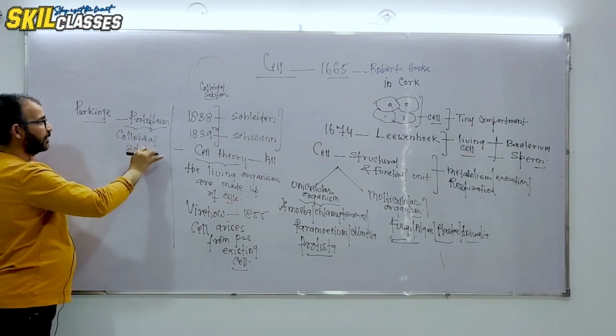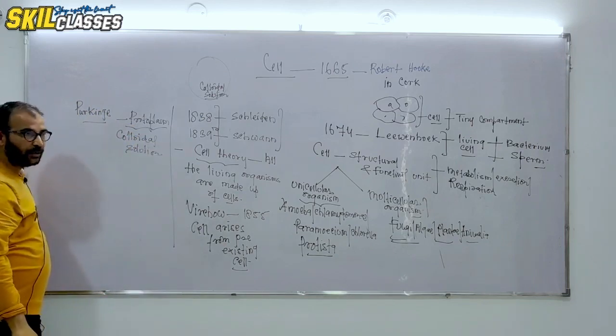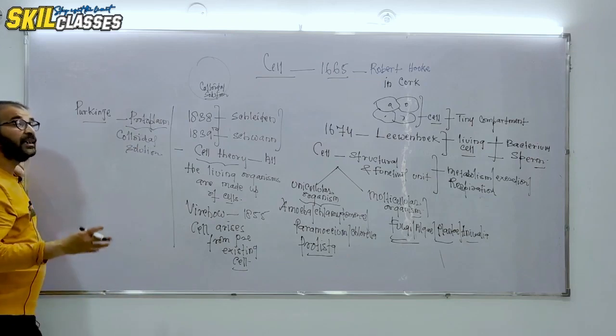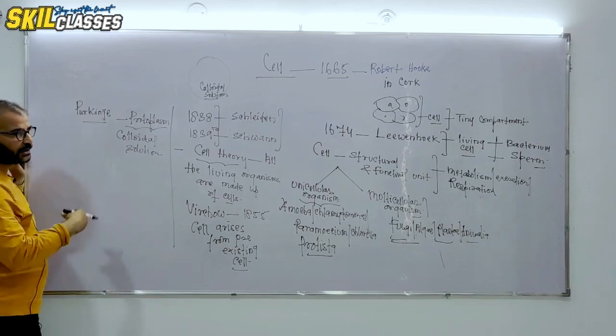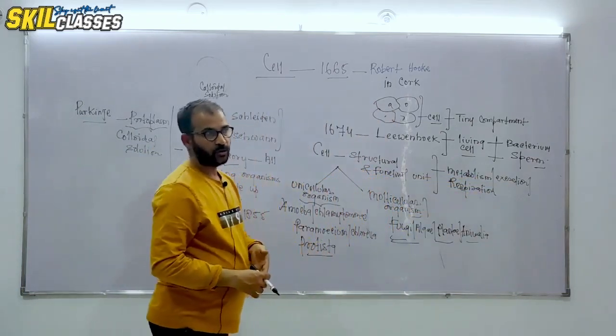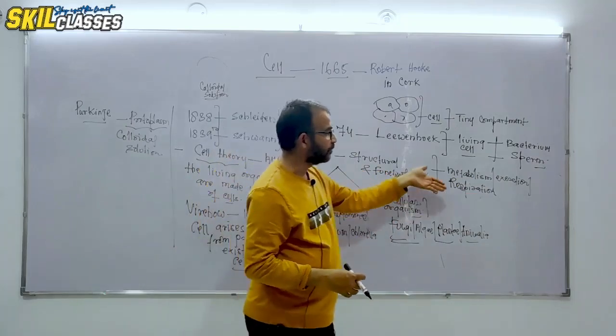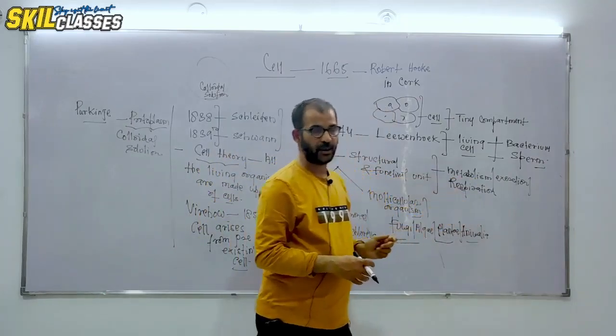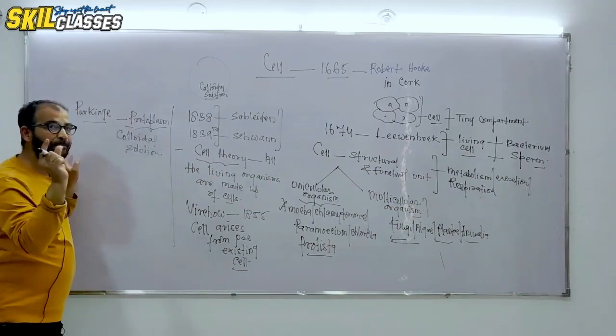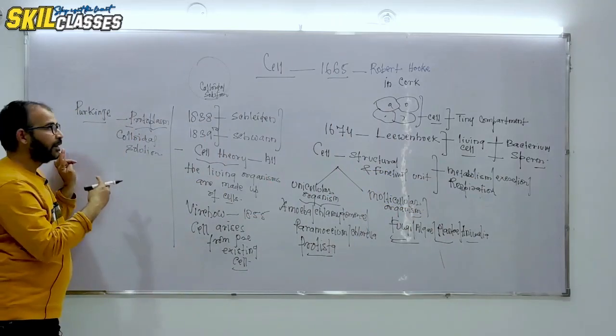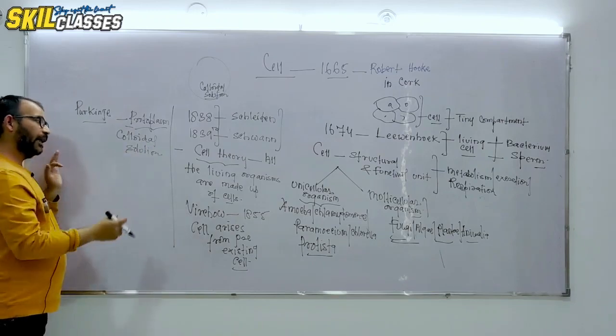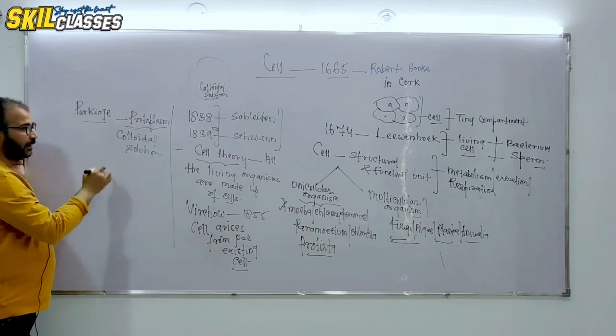The next question arises: what is protoplasm? People say this is the living substance of the cell. Because all activity that happens in the cell happens in this protoplasm. Any living organism's characteristics and features are basically represented by this protoplasm. If you further divide it, protoplasm can be divided into two parts.